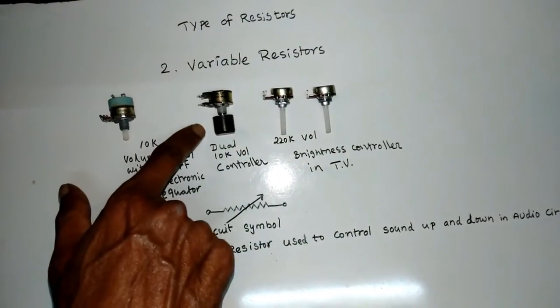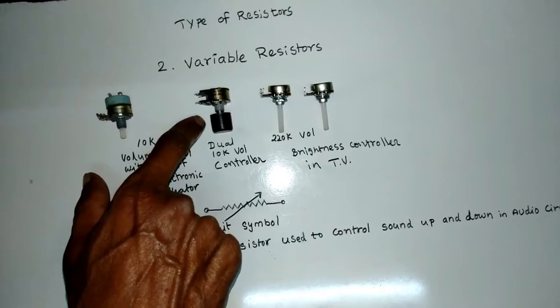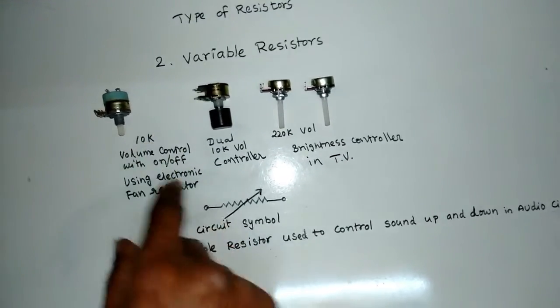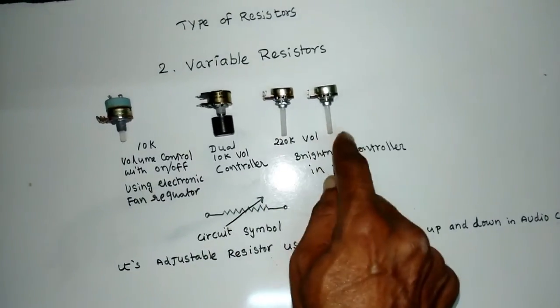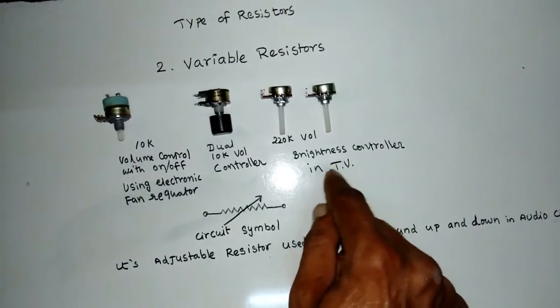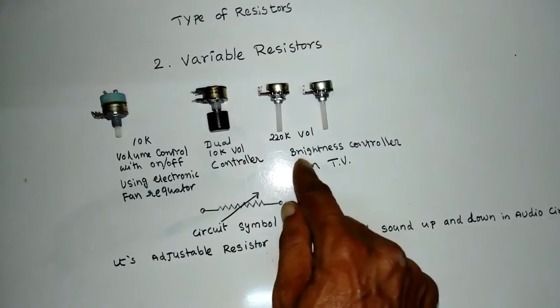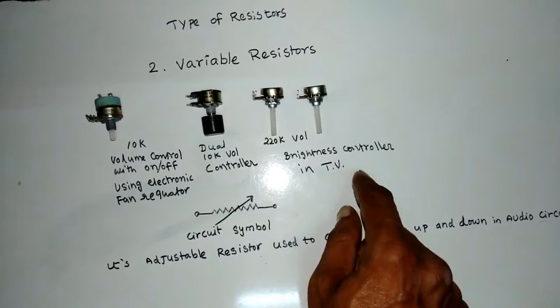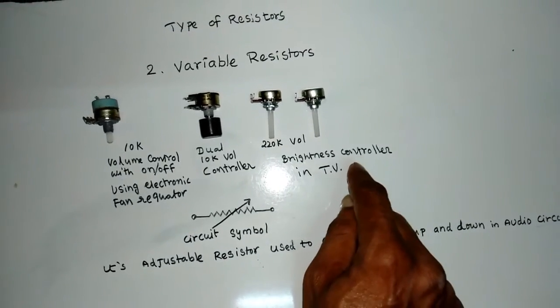This one dual volume control, right and left stereo volume control, sound control section. This 220K controller is used in TV brightness controller for controlling brightness in old TVs.